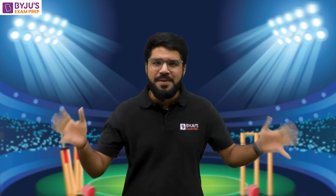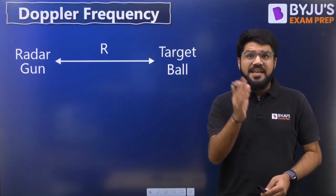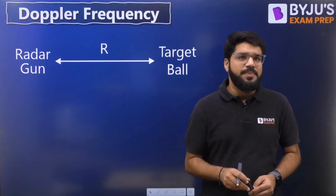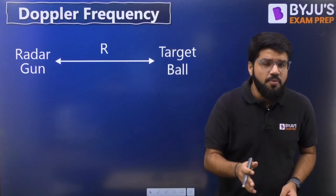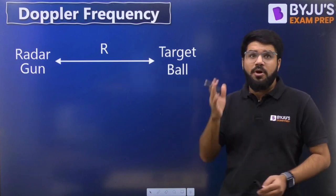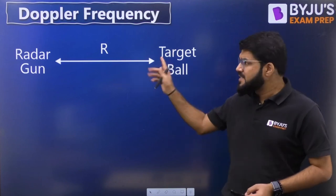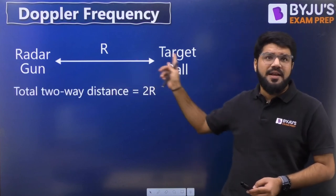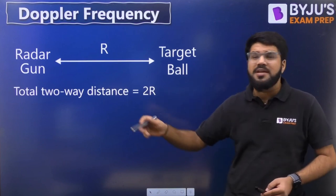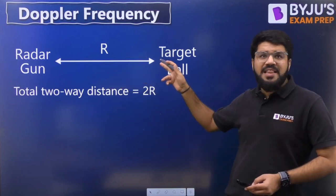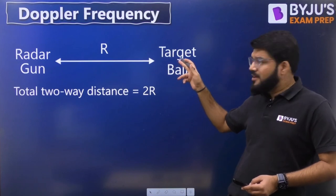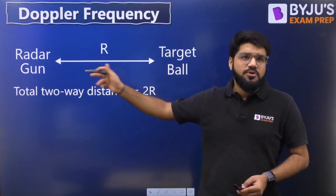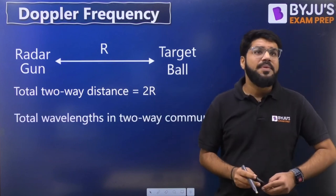Now let us understand the Doppler frequency calculations and how to derive the speed formula on the smart board. Let's say the distance at a particular moment between the radar gun and the target ball is r. The total two-way distance is 2r — two-way is important because the gun emits waves, they interact with the ball, reflect back, and return to the radar.